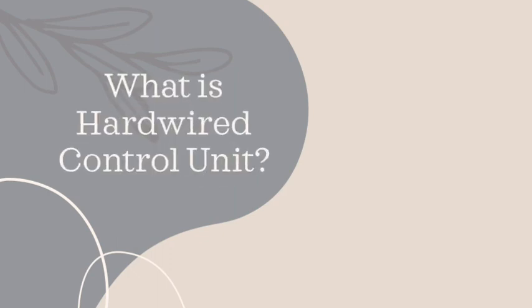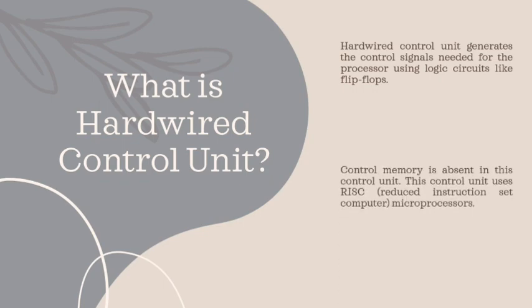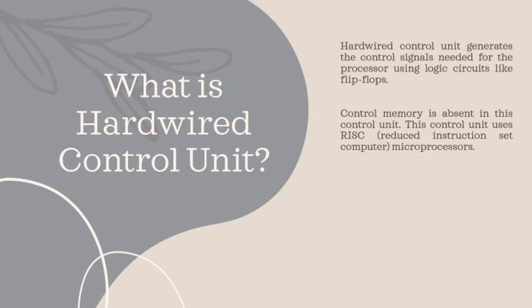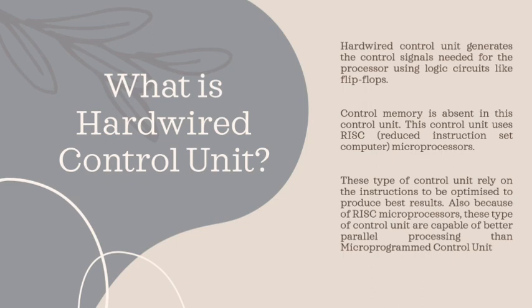A hardwired control unit generates the control signals needed for the processor using logic circuits like flip flops. Control memory is absent in this control unit. This control unit uses RISC — reduced instruction set computer — microprocessors. These types of control units rely on instructions being optimized to produce the best results.